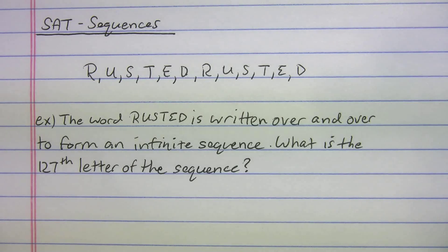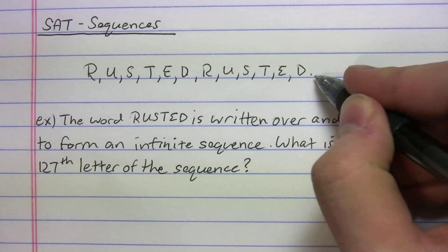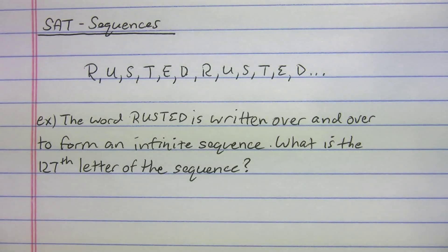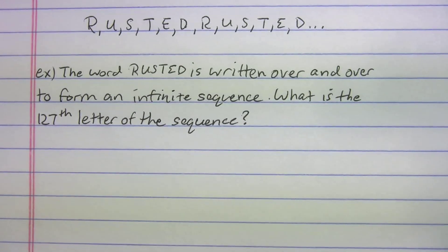The first one we have is a repeating sequence. This one says the word RUSTED is written over and over to form an infinite sequence. What is the 127th letter of the sequence? So this thing gets written over and over and over again and it just keeps going. What you don't want to do is try and write this thing out over and over on test day - that would be a horrible idea, it would take too long. There's got to be a shortcut, right? And there is, so let me show you.